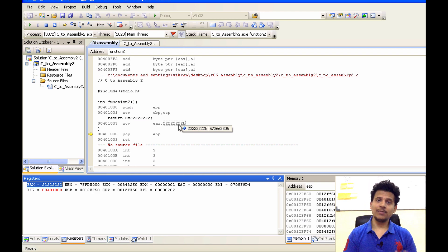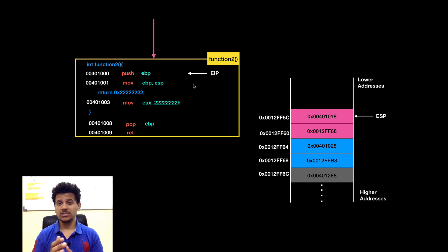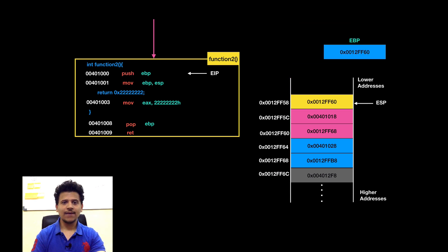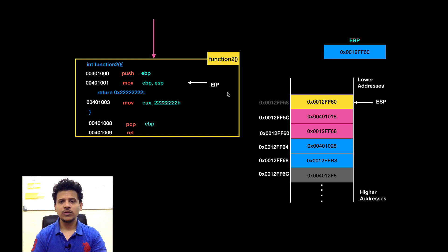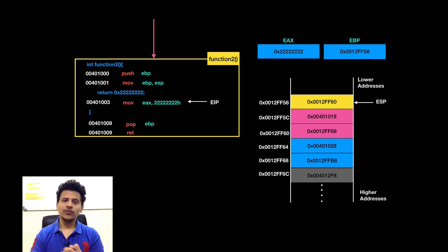Let's see the same things in animation format. Function 1 called function 2, and we have passed control to function 2. Function 2 now begins execution. First, it will push the value from EBP onto the stack to save function 1's stack frame pointer. EBP got pushed onto the stack. Now EIP is pointing at move ESP into EBP to set function 2's stack frame. ESP is pointing at 0x0012FF50, that will get moved into EBP. Now EBP contains 0x0012FF50, and from this point function 2's stack frame has begun. Now function 2 is returning with the 2s. For that, we will copy the 2s into EAX. We have moved the 2s into EAX.